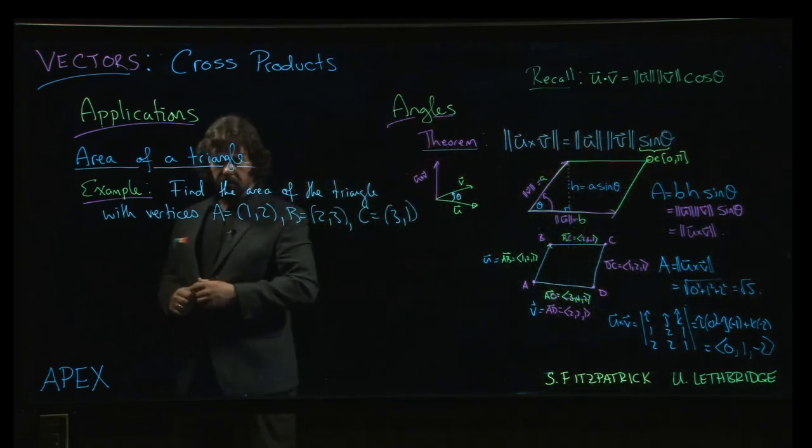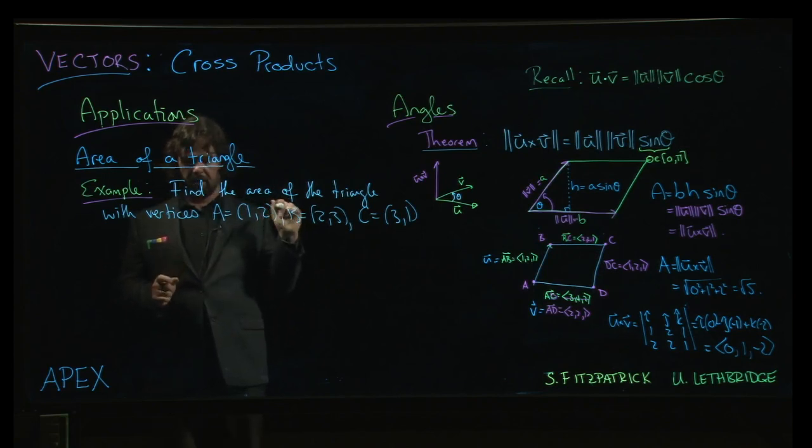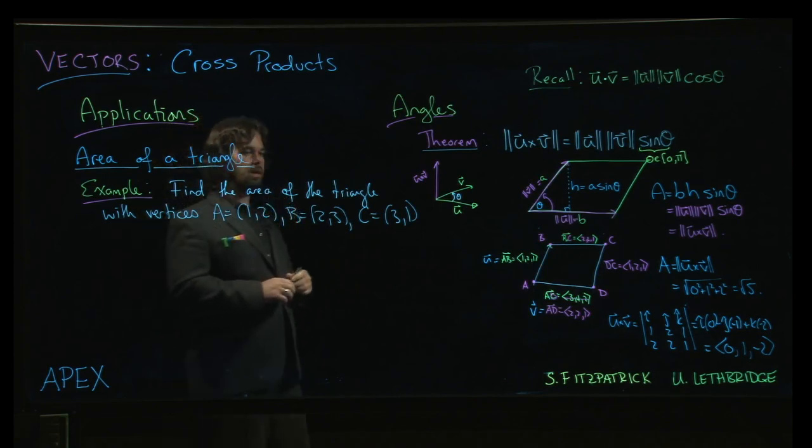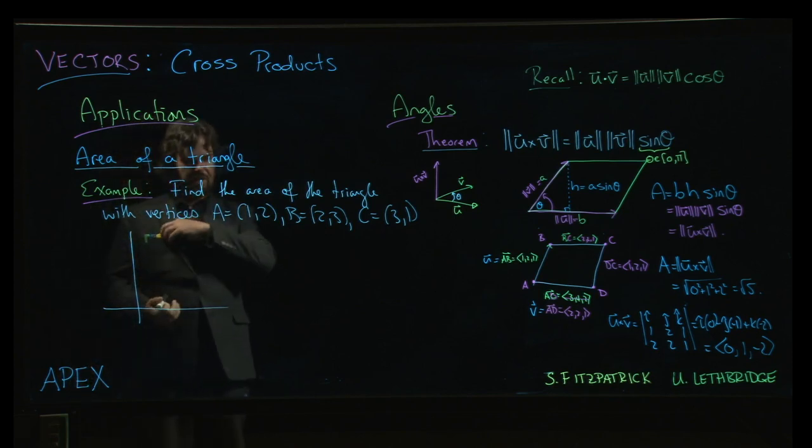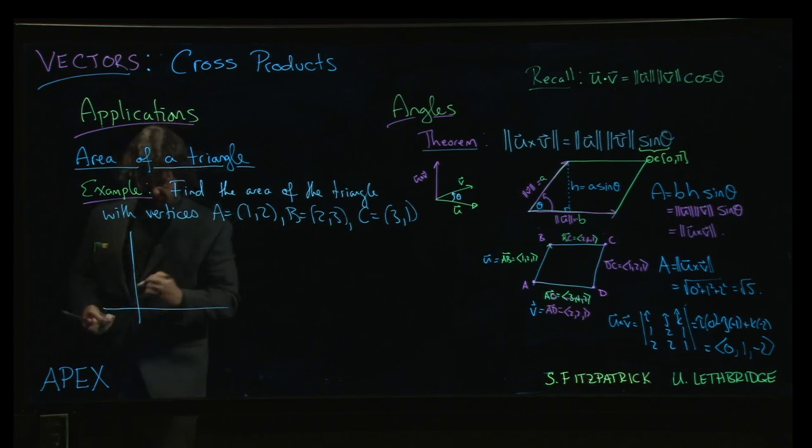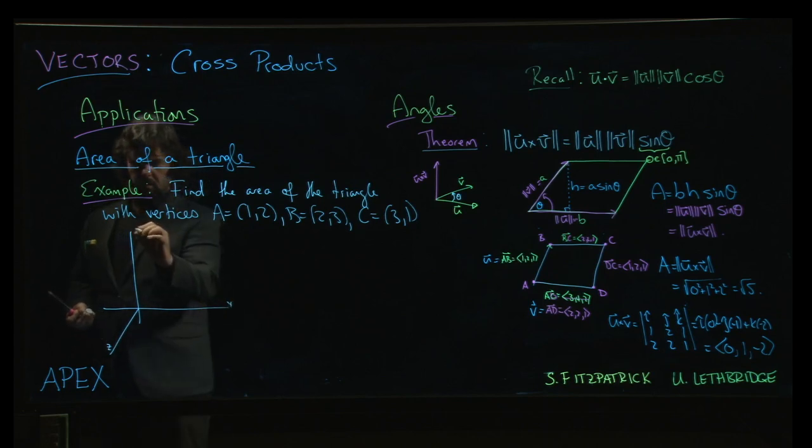Alright, so next up we're going to see how to use the cross product to find the area of a triangle. Now again, this particular triangle is in the xy plane, but we'll cheat again and imagine that it's really a triangle in three-dimensional space. We'll just add the z-axis coming out of the board. And so we'll imagine that when we say the point A is at 1, 2, we'll think of that as 1, 2,